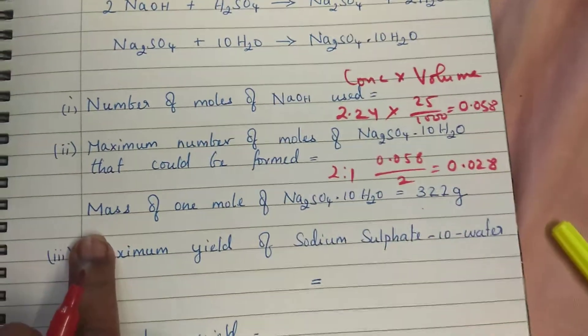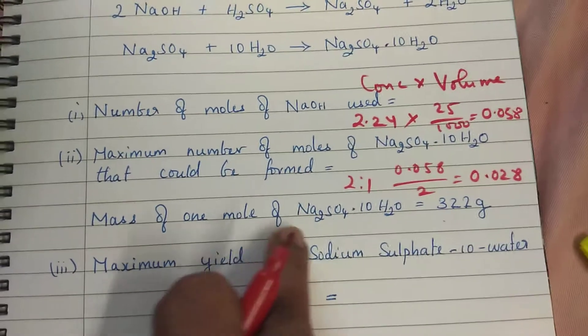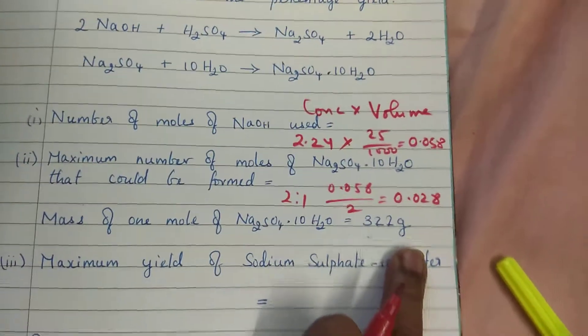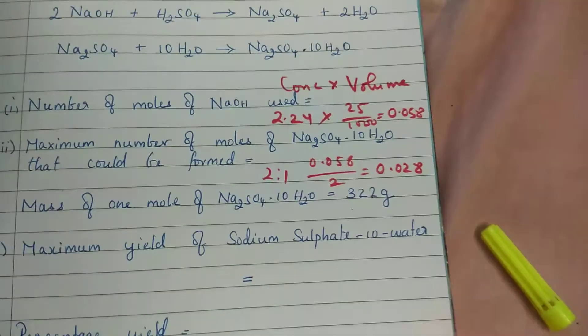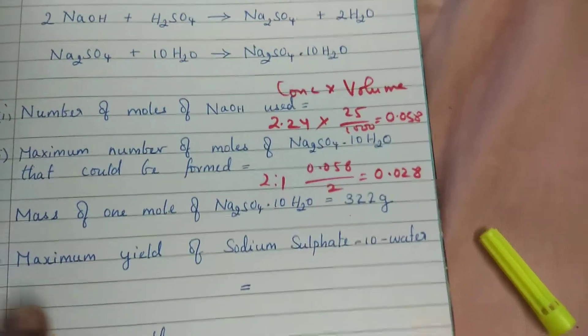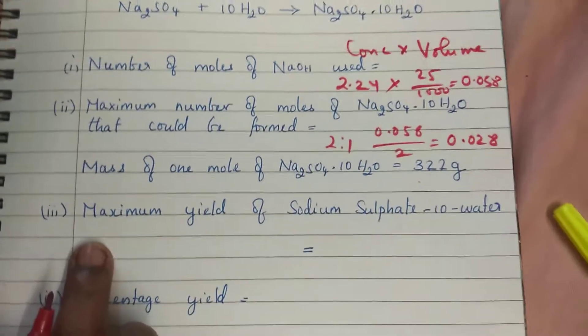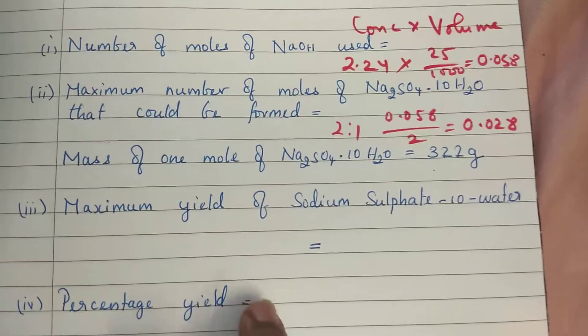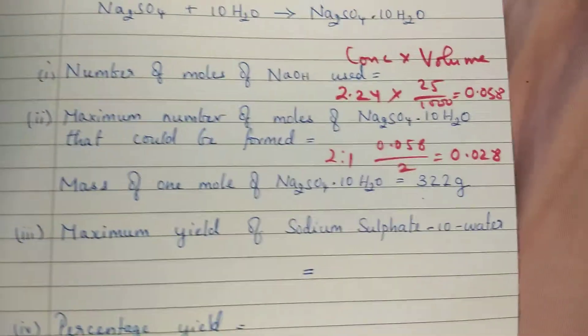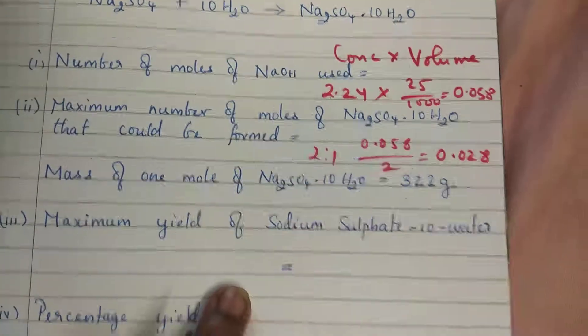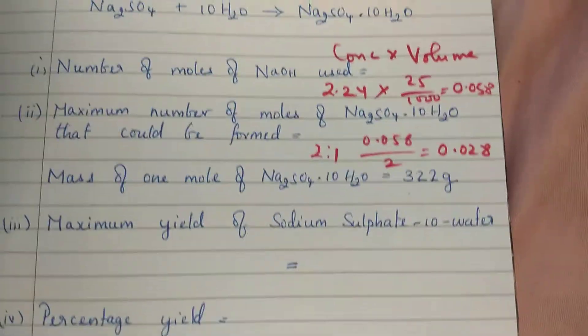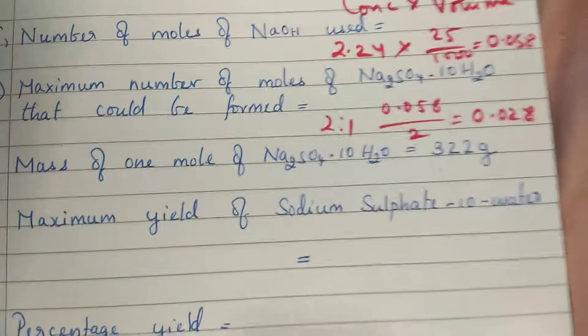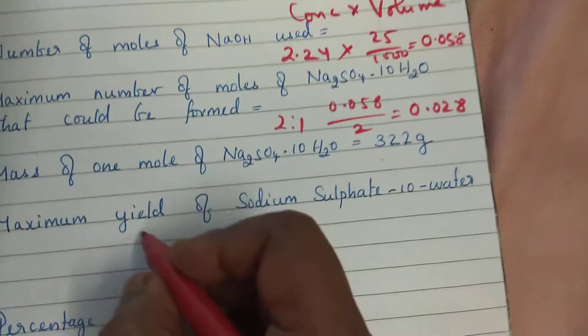In the question they have given mass of 1 mole of hydrated sodium sulfate is 322 gram. This is the molar mass or MR value of sodium sulfate. The question is maximum yield of sodium sulfate 10 water. How will you calculate the maximum yield? Maximum yield is the mass.